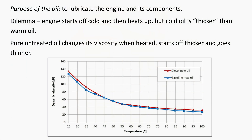The purpose of the oil is to lubricate the engine and its components, but there's a dilemma because the engine when started is cold and then it heats up. The problem is oil is thicker when it is cold and as it heats up it flows more easily, because pure untreated oil changes its viscosity when heated — it starts off thicker and goes thinner. If you have a look at this graph, this is pure untreated oil with no additives.